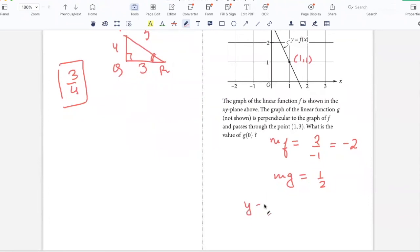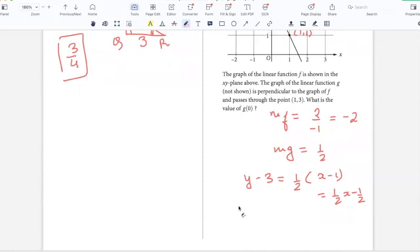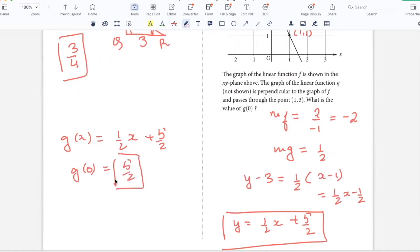I know that G passes through 1 comma 3. So I can say Y minus 3 equals 1 by 2 times X minus 1, which is 1 by 2X minus 1 by 2. So Y equals 1 by 2X plus 3 minus 1 by 2, so plus 5 by 2. G of X can be written as 1 by 2X plus 5 by 2. So G of 0 will be 5 by 2.